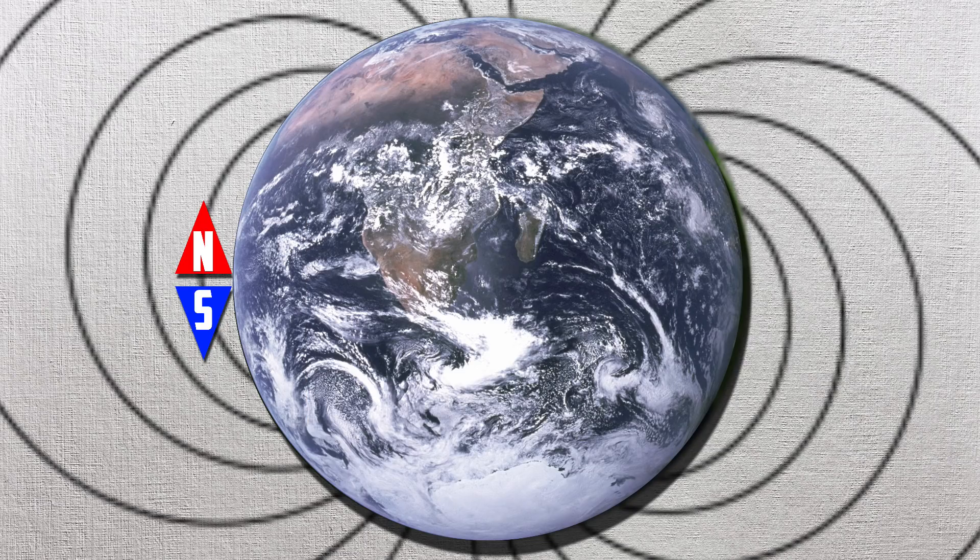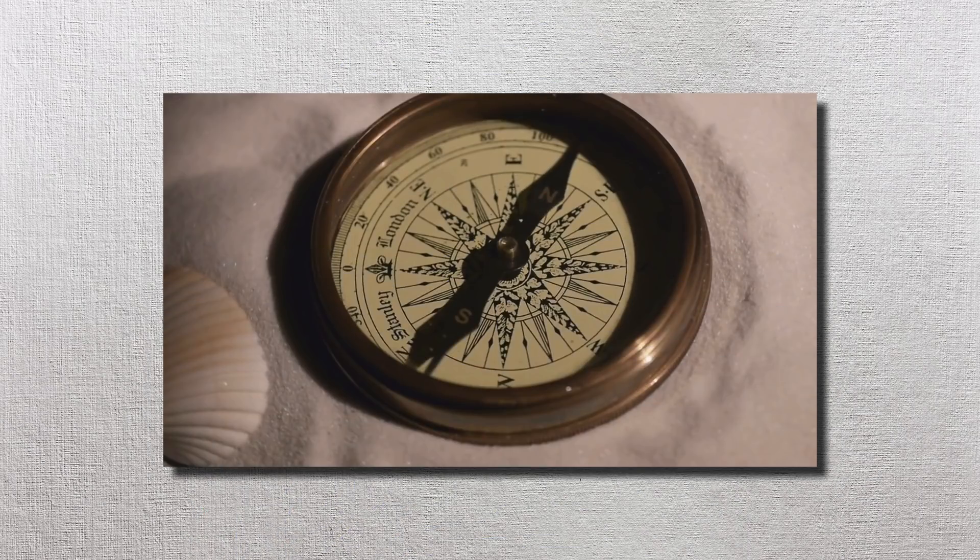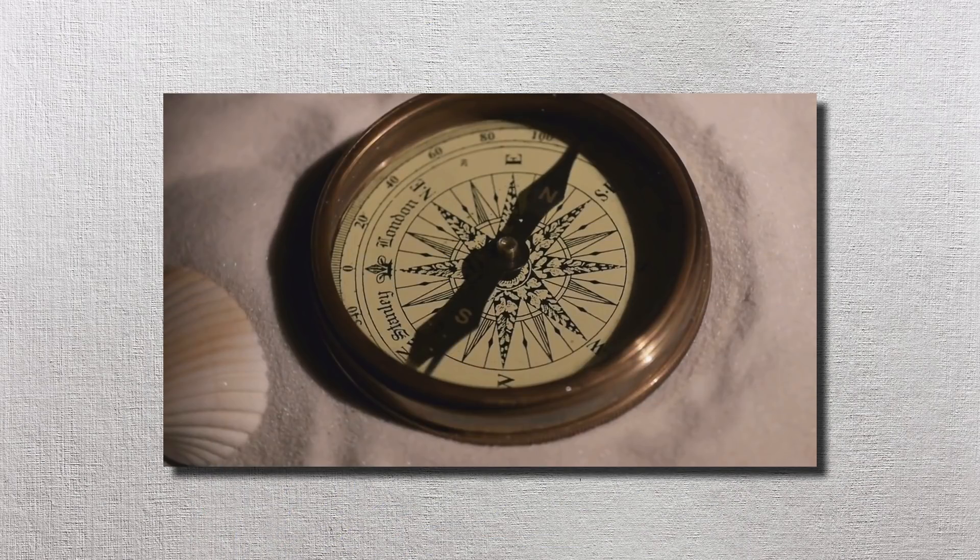But none of this matters. While it is true that compasses line up to the earth's magnetic field, rather than simply pointing towards the north pole, a compass is also incapable of pointing down or up. Compasses are designed to only work on one plane.